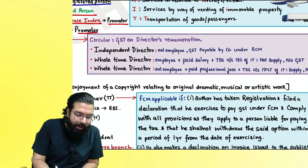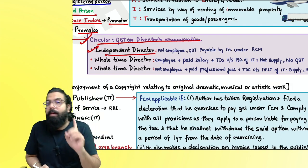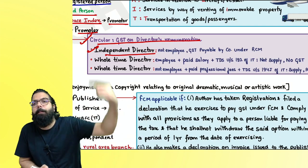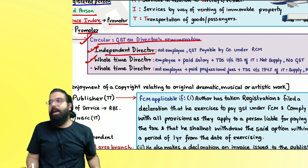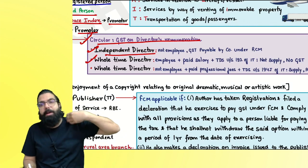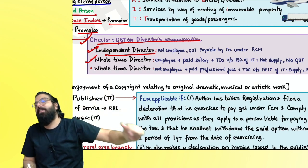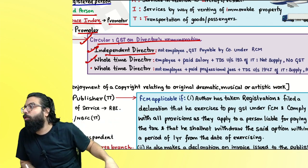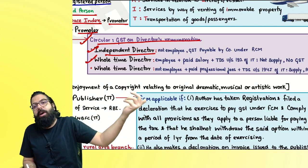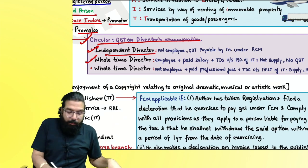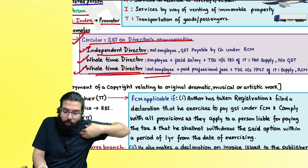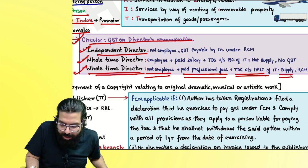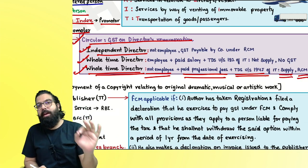Independent directors are not employees, so whenever an independent director gives services to a company, the company always pays GST under RCM. But if a whole-time director gives services to a company and the company pays salary with TDS deducted under section 192, it is an employer-employee relationship — neither supply of goods nor supply of services. However, if a whole-time director is not an employee, receives professional fees, and TDS is deducted under section 194J, it is a supply and GST applies under RCM.